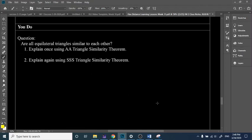So, I have a question for you all. Are all equilateral triangles similar to each other? So, if I have one equilateral triangle and I draw another equilateral triangle, are those similar? It doesn't matter what the dimensions are. So, answer those and explain it twice. The first time, explain using AA. The second, explain using SSS. Alright. See you all later.